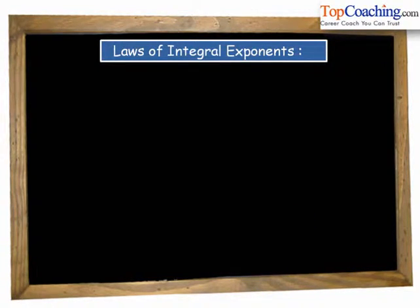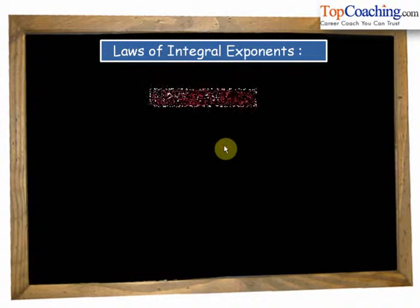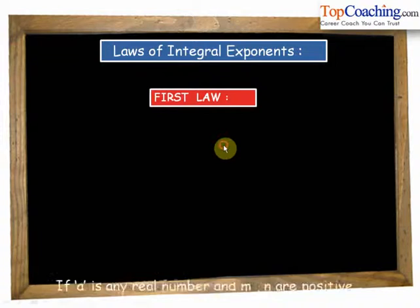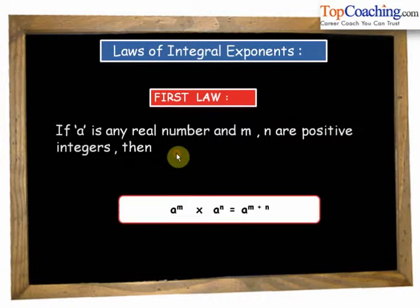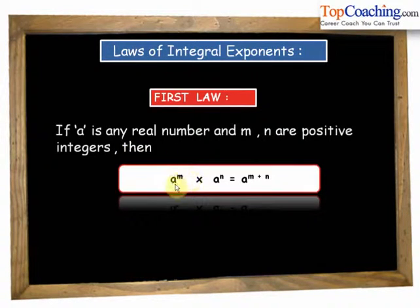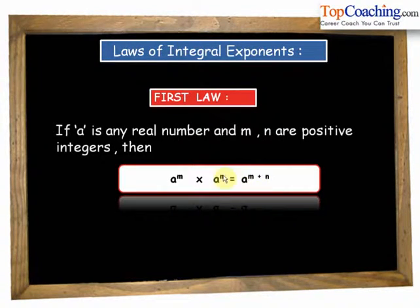One by one we are going to see some of the very important laws of integral exponents. The first law states that if a is any real number and m and n are positive integers, then a to the power of m into a to the power of n is equal to a to the power of m plus n.